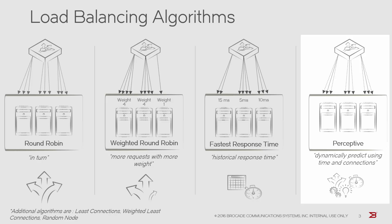The perceptive algorithm uses a combination of response time data and connection counts to predict which node is likely to have the fastest response time for each request, and is tuned dynamically by the traffic manager depending on traffic conditions.